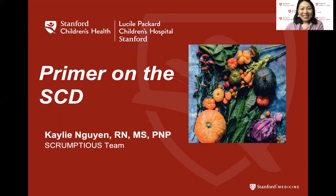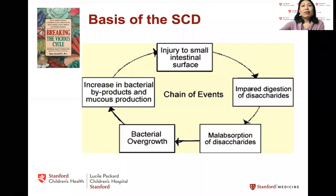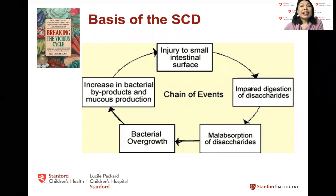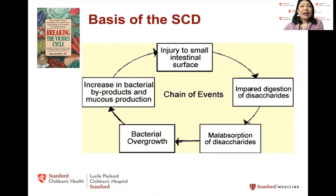If you're interested in the SCD, you might have read about it via this book called Breaking the Vicious Cycle. The SCD was derived by Dr. Sidney Haas in the 1950s, initially to treat celiac disease. In the 1960s, Elaine Gottschall, who was then a housewife, met with Dr. Haas, desperate to find a non-surgical intervention for her daughter who had severe ulcerative colitis. She used this diet to treat her daughter and credited it with preventing a colectomy.